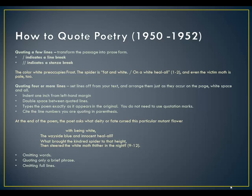Here's an example: 'At the end of the poem, the poet asks what deity or fate cursed this particular mutant flower with being white: the wayside blue and innocent heal-all, / what brought the kindred spider to that height, / then steered the white moth thither in the night?' Things to think about include omitting words, quoting only a brief phrase, and omitting full lines. There's more information about this on pages 1950 to 1952, and we will be talking about this more next week.